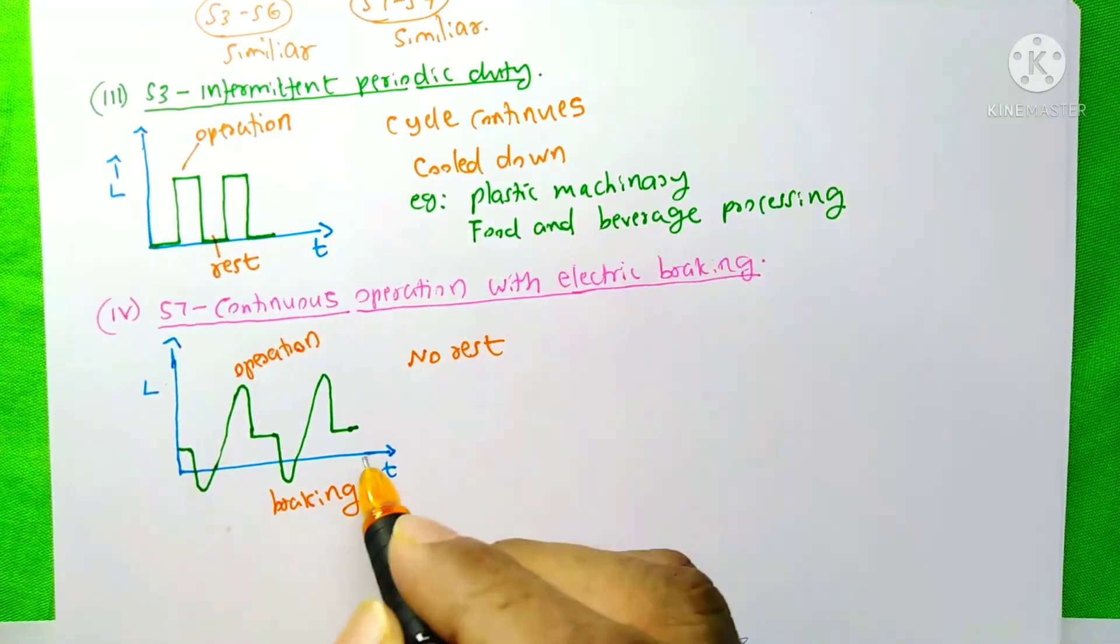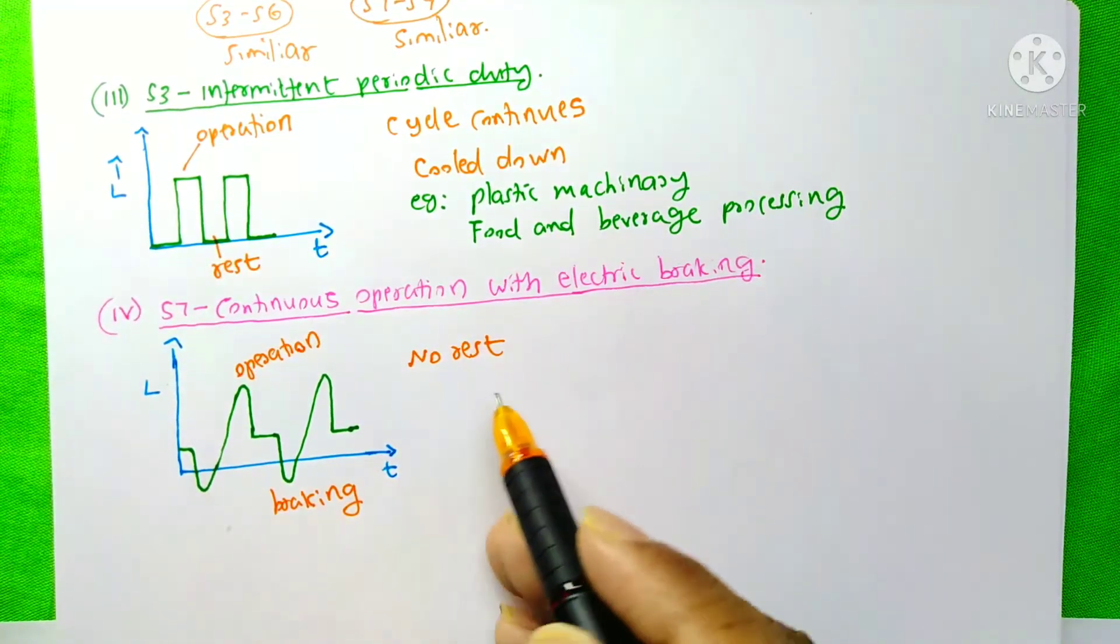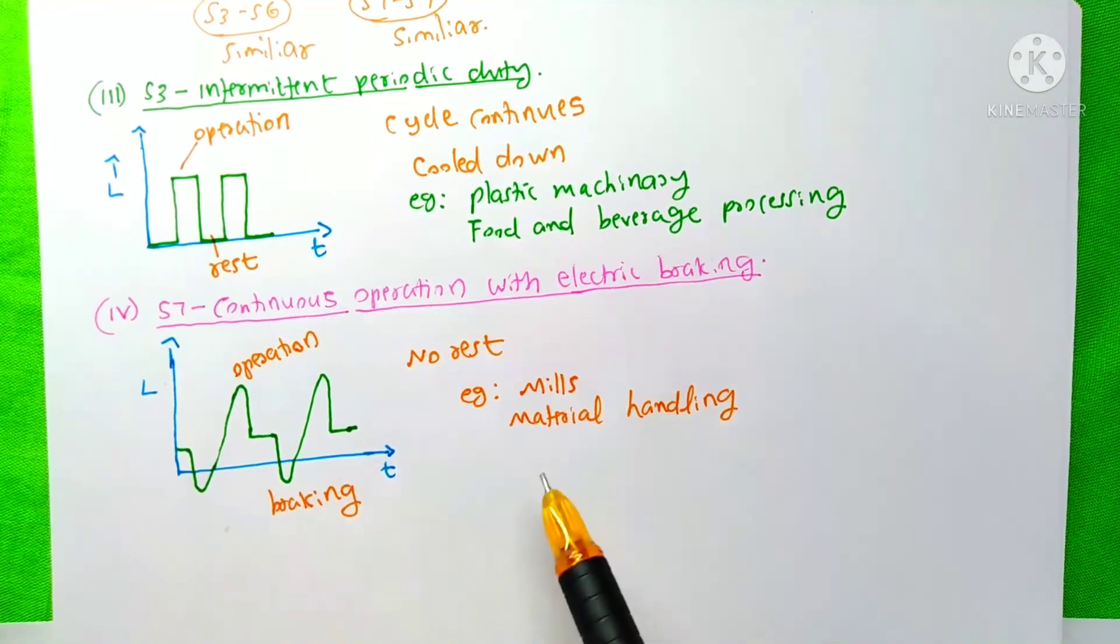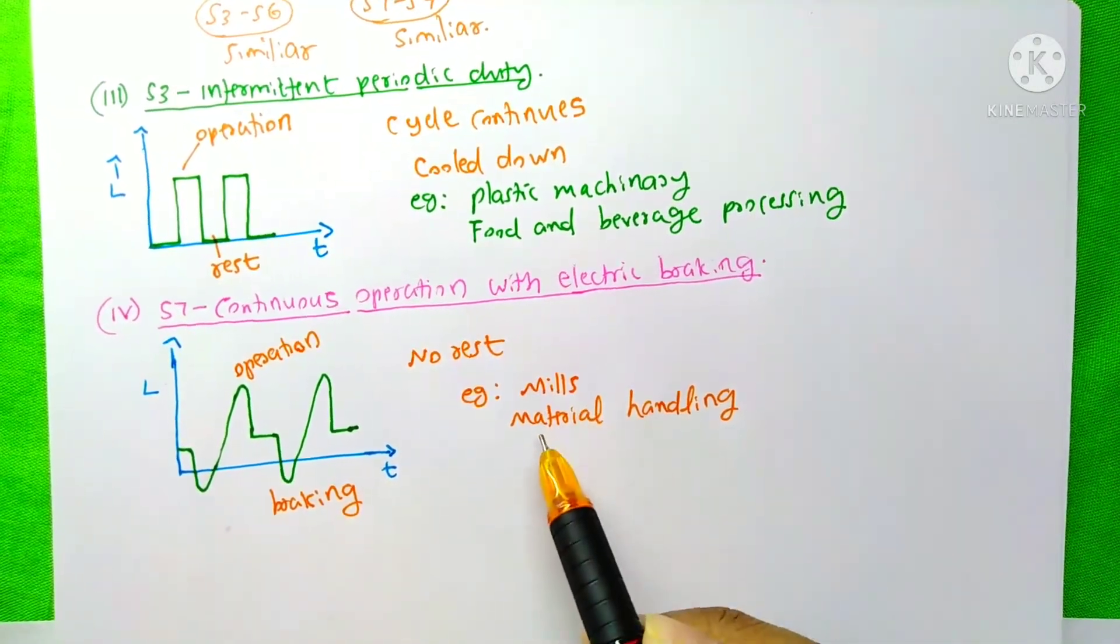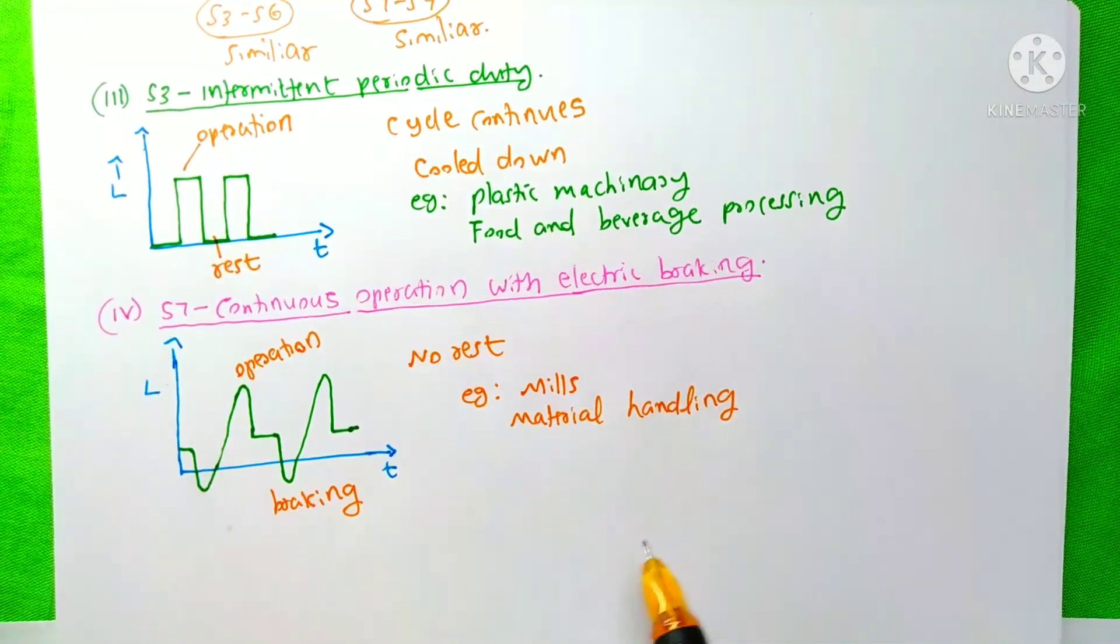It is a very difficult task for the motor and the motor cannot reach thermal equilibrium and ambient temperature state. Motors used in crushing mills and material handling process are examples of this duty.